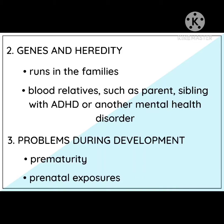Third is problems during development. These are problems that occurred during pregnancy. First is prematurity — the child is born premature. The next is prenatal exposure — exposure to toxins such as lead, paints, or other toxins. Exposure to environmental toxins during pregnancy, and low birth weight are also included. So the child may be premature, have low birth weight, or have been exposed to toxins.